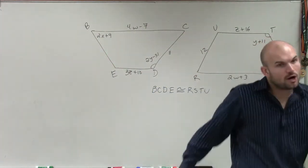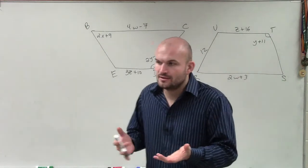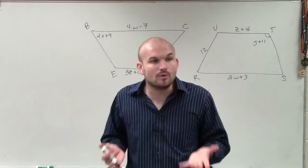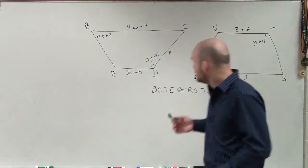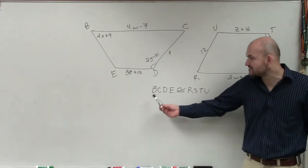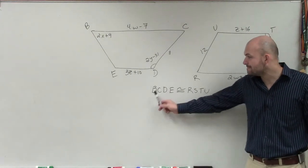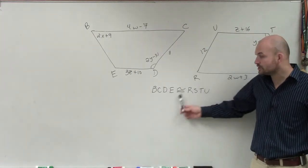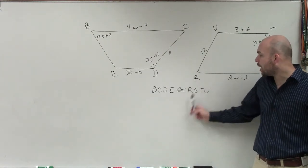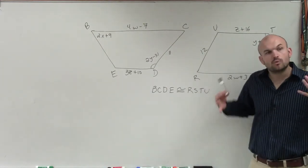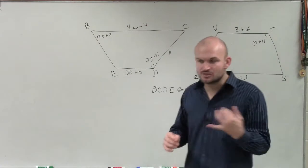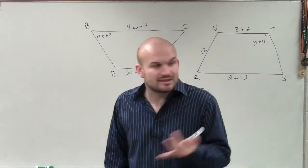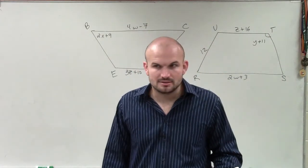So again, our only piece of information that we know is going to be true, that we can go off of, is this statement right here, which says our polygon BCDE is congruent to polygon RSTU. So what does that tell me? Because one thing I asked you, if you get stuck on this problem, label your corresponding parts.